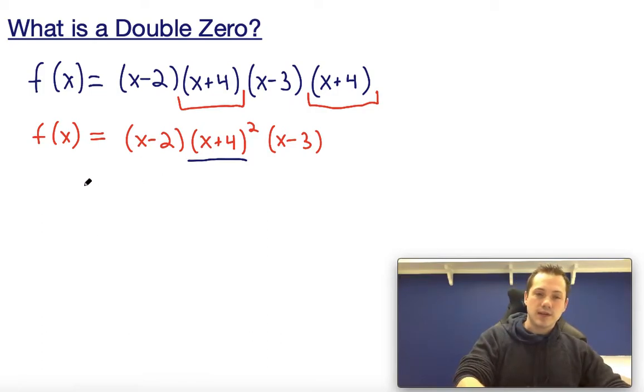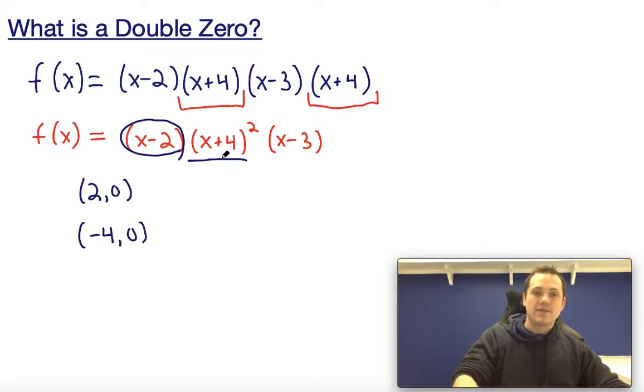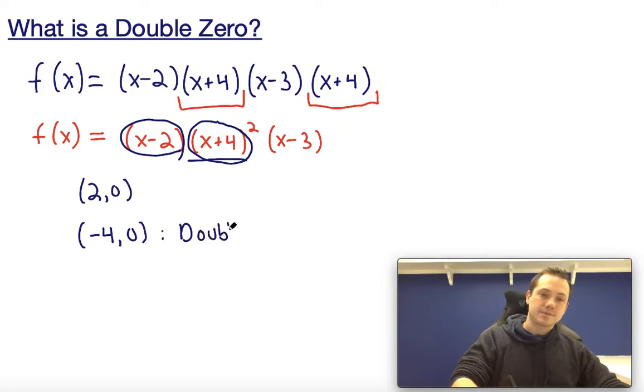What we can say here is that (x+4) is a factor that leads us to a double zero at -4. Here, we could see that our zeros are going to be at the point (2,0), right? I get that if I set this equal to zero. We would have a double zero at the point (-4,0). If I set this factor equal to zero and subtract 4 from both sides, this is a double zero.